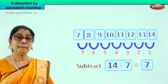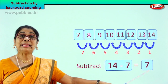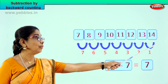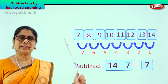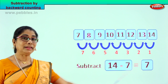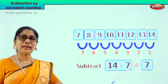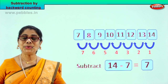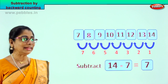14 minus 7 is equal to 7. From 14 we counted backward 7 steps and we got the answer 7. What is 14 minus 7? Equal to 7. Good. Very good. Shall we take another sum?